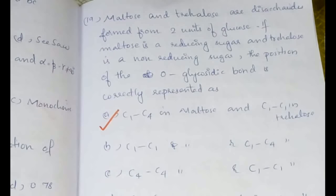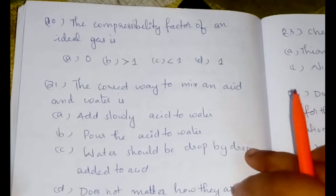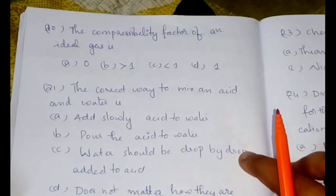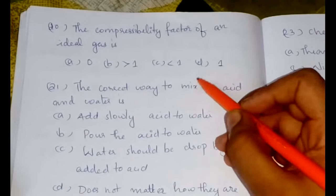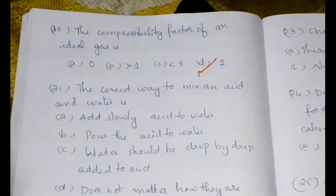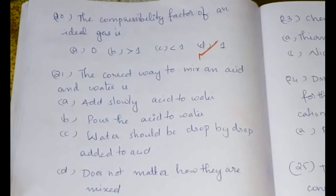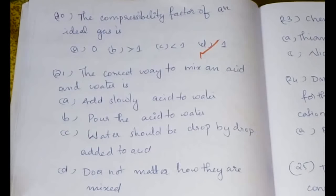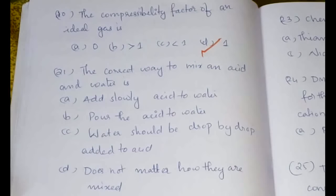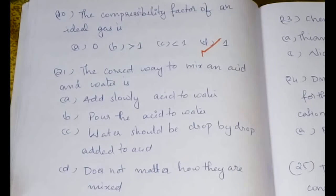At least you should have known maltose, and as I have said, if you have confusion between any two options and you feel like writing more answers, you must have attempted this one as well. The next question, again a very simple question: the compressibility factor of an ideal gas should be equal to one. We have discussed this in the gaseous state video already.